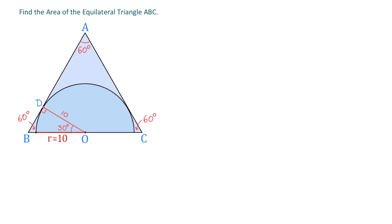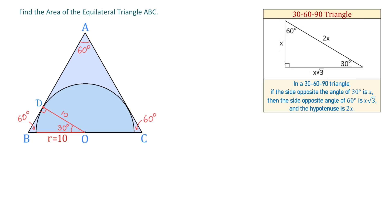For this, let's review the 30-60-90 degree triangle. In such a triangle, if the side opposite the 30 degree angle is X, then the side opposite the 60 degree angle is X times square root of 3, and the hypotenuse is 2X. In our problem, we know that the side opposite the 60 degree angle is 10, so we can write that X times square root of 3 equals 10.